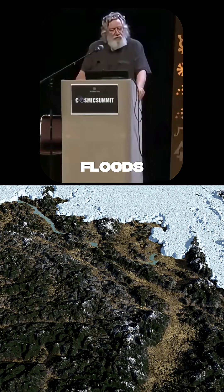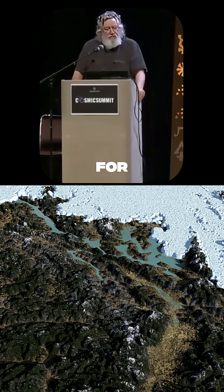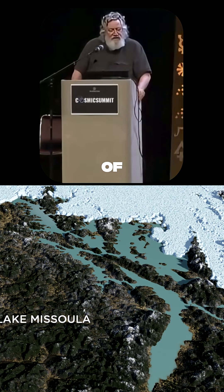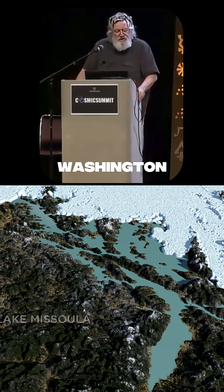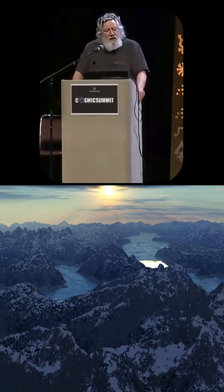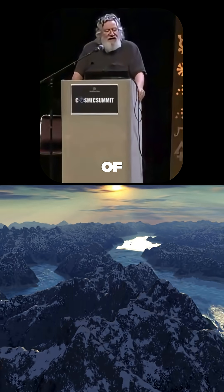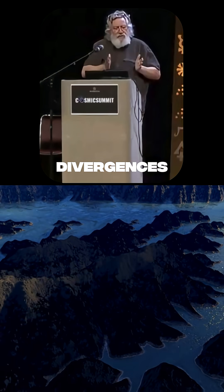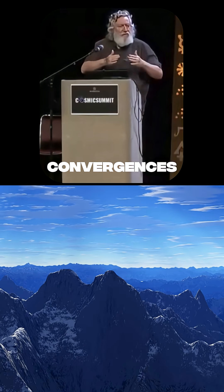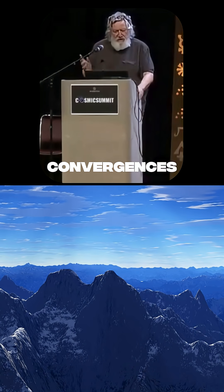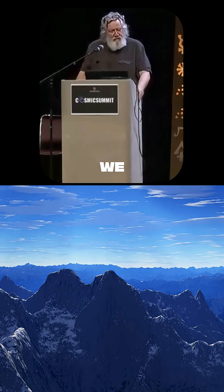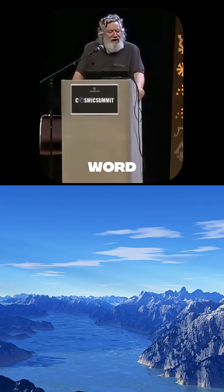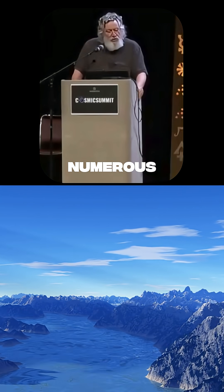The Missoula floods were responsible for generating the channeled scablands of east-central Washington state — a complex of anastomosing channels, meaning a plexus of divergences and convergences. That's simply what we mean by that mouthful of a word: anastomosing.